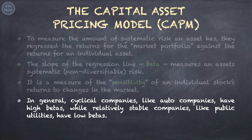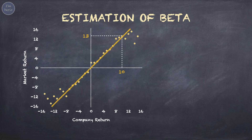In general, cyclical companies like auto companies have high betas, while relatively stable companies like public utilities have low betas. To calculate beta, we regress the market returns against the company returns. The Y-axis represents company returns, while the X-axis represents market returns. The slope of the regression line is beta.